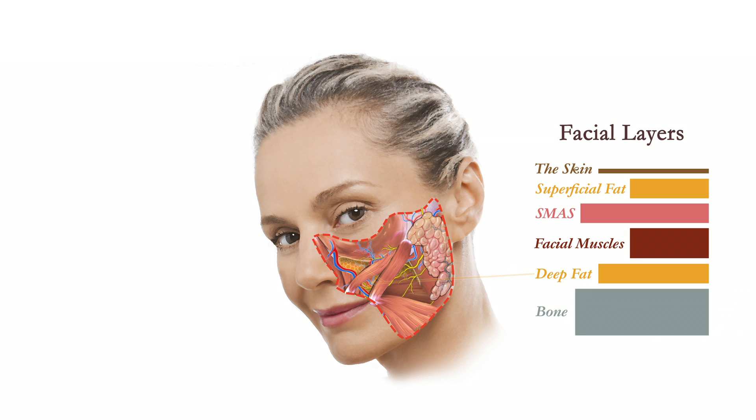Going even deeper below this layer, we start seeing the deep fat pads. Then lying below that layer we have the facial skeleton — the bony base that supports all the soft tissue structures of the face that we have mentioned. Now that we have finished reviewing the superficial anatomy of the human face, especially the SMAS and how it pertains to facelifting, we're ready to move on and discuss the different techniques in facelifting.